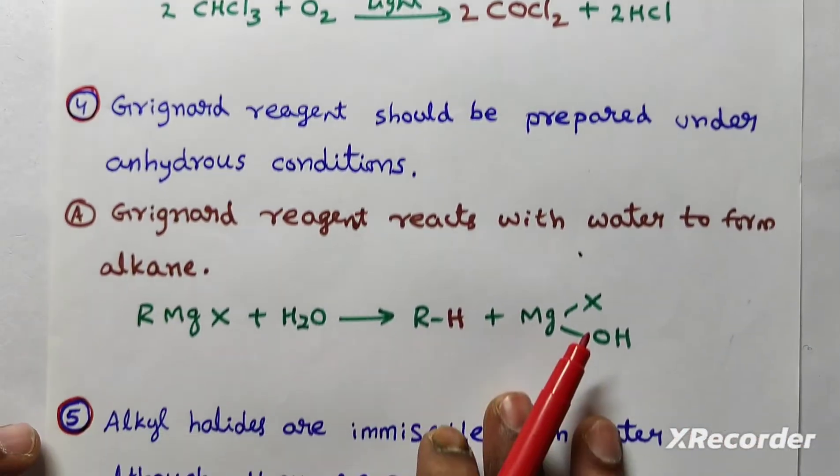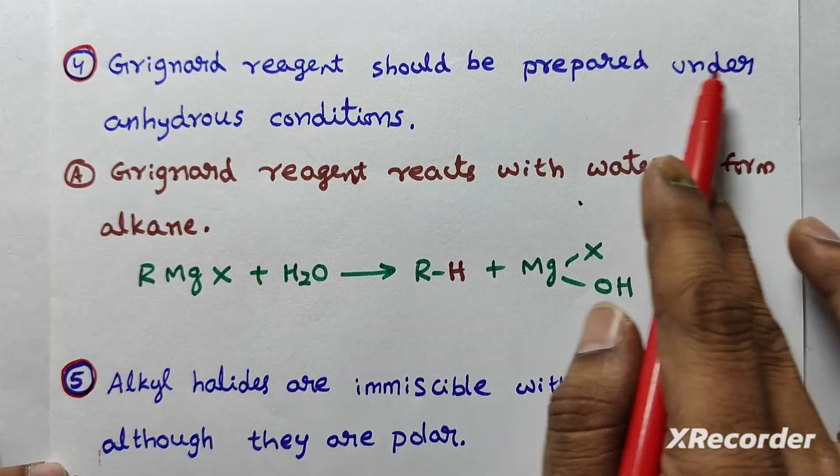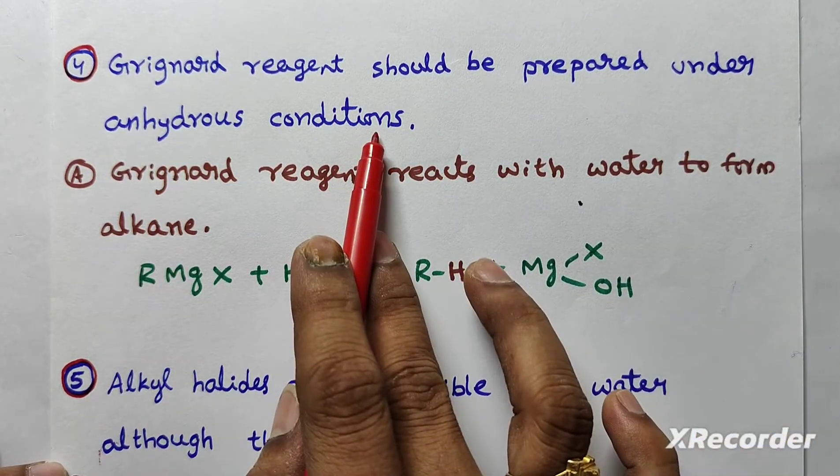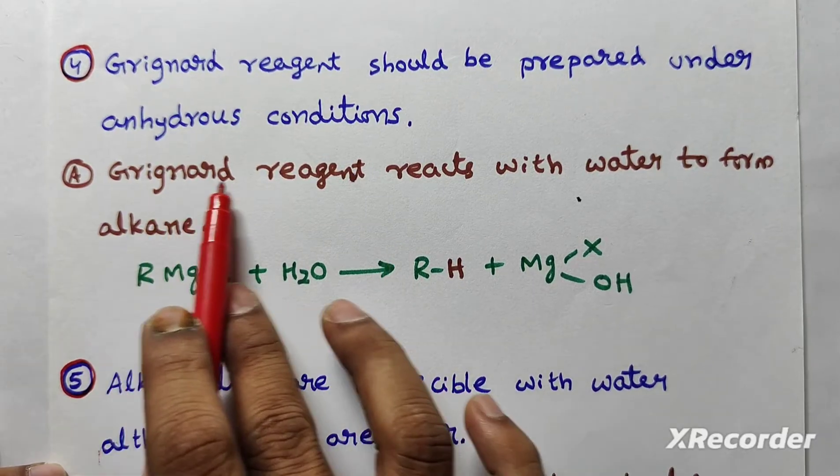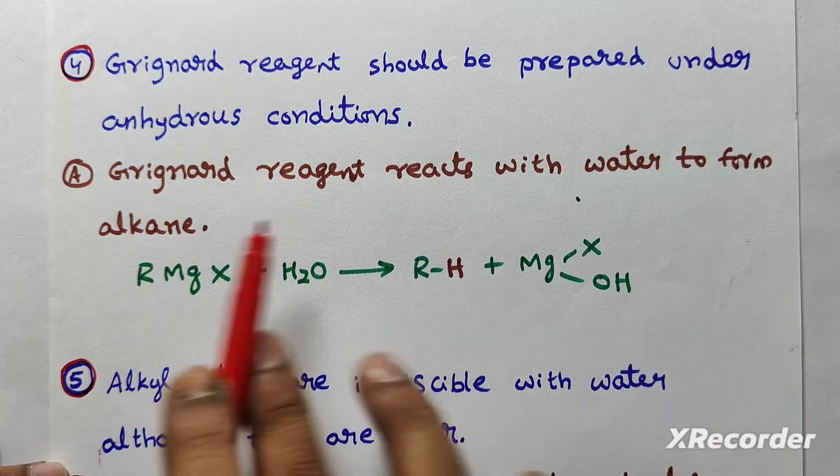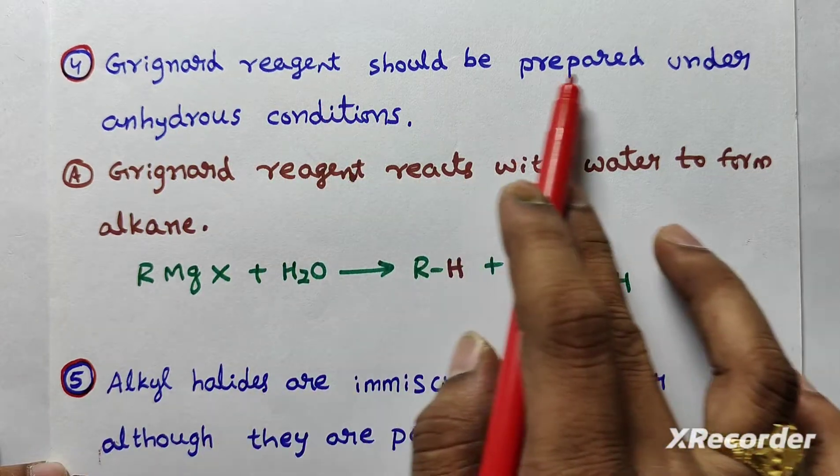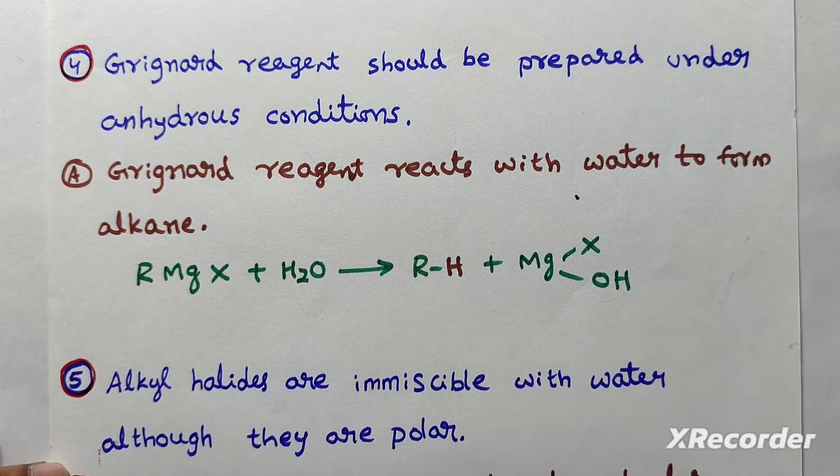Next question, Grignard reagent should be prepared under anhydrous conditions. It means absence of water. Reason: Grignard reagent reacts with water to form alkane. That is the reason Grignard reagent should be prepared under anhydrous conditions.